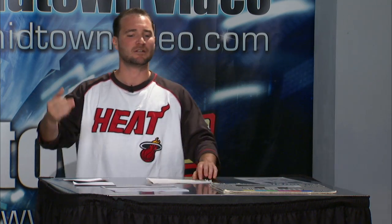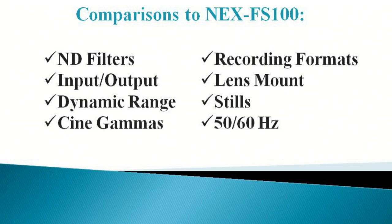Something the cameras actually have in common is dynamic range. Both the NEX FS100 and the FS700 have about 11.5 stops of dynamic range — a really huge advantage over traditional video cameras. This is for filmic production, shallow depth of field, and high-contrast shots where you're not losing detail in the highlights or the shadows.